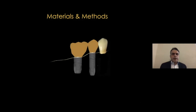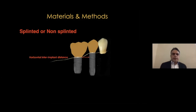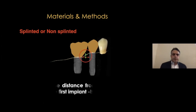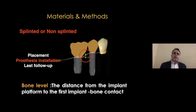We included both splinted and non-splinted restorations, as the literature shows no significant differences in marginal bone level alterations between the two. We measured the horizontal inter-implant distance, the vertical implant discrepancy, and the bone level defined as the distance from the implant platform to the first implant-bone contact. Radiographic measurements were taken at the time of placement, at prosthesis installation, and at the last follow-up, which was at least one year post-loading.